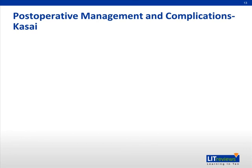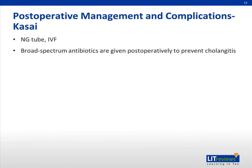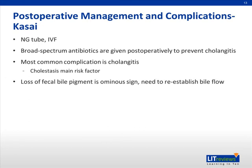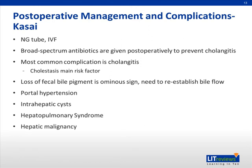Postoperative management of patients who undergo the Kasai procedure should include an NG tube and IV fluids. Broad-spectrum antibiotics are given postoperatively to prevent cholangitis, which is the most common complication of the procedure. Cholestasis is the main risk factor for cholangitis. The loss of fecal bile pigment is an ominous sign, and one needs to reestablish bile flow immediately. Other complications include portal hypertension, intrahepatic cysts, hepatopulmonary syndrome, and hepatic malignancy.